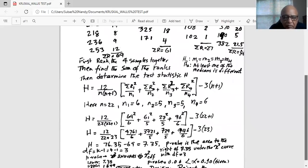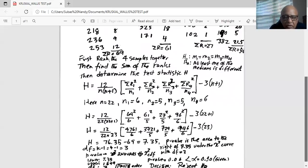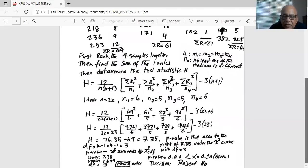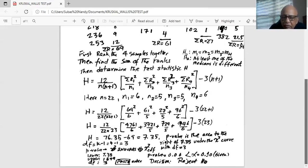So when we plug in the formula, that becomes 12 divided by 22 times 23, times the quantity: 69 squared divided by 6, plus 61 squared divided by 5, plus 27 squared divided by 5, plus 96 squared divided by 6, end quantity, minus three times 23. Finally, the test statistic H works out to be 7.35.